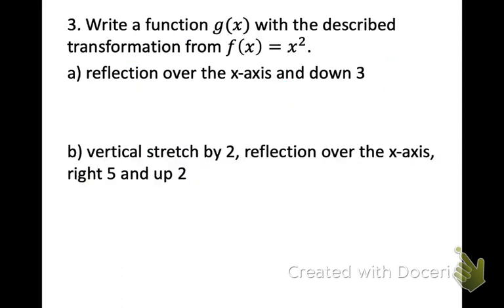And finally, check your work on number three. Here you needed to write a function from the parent to show the transformation that has been described. In a, we need a reflection over the x-axis and we need to move that down three. So the reflection, we're going to have to adjust the a value. I just simply put a negative or it's technically a negative one. That will reflect the graph. And now down three, I introduce a k value. So just minus three.